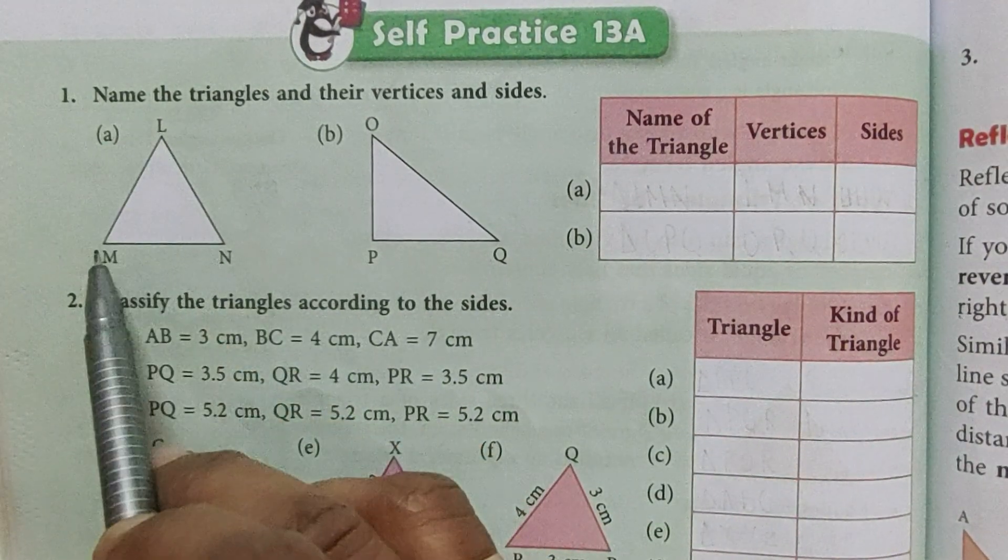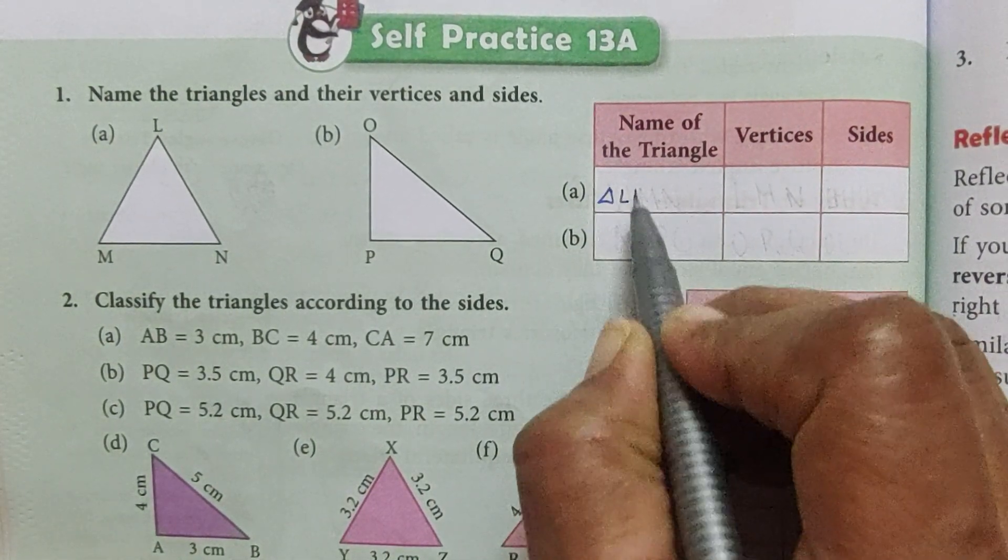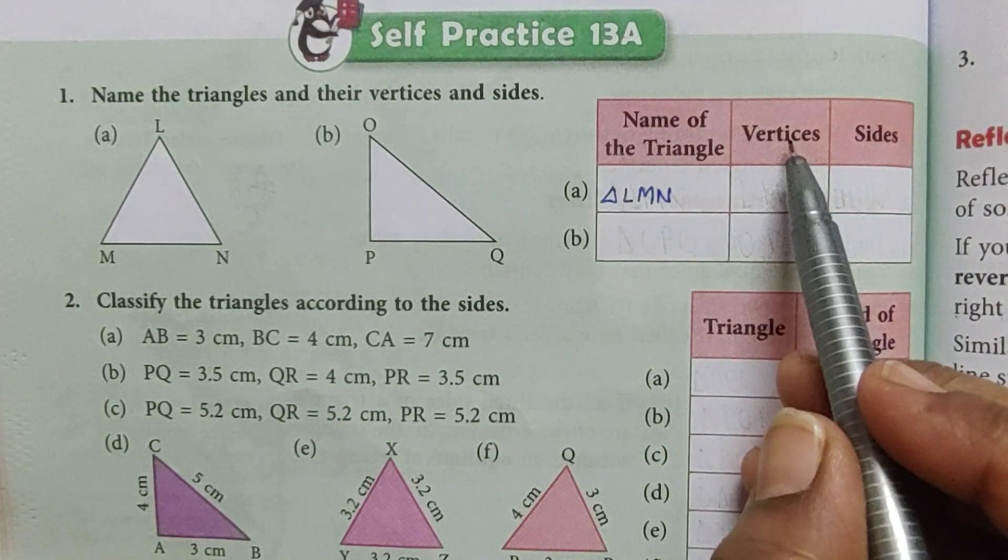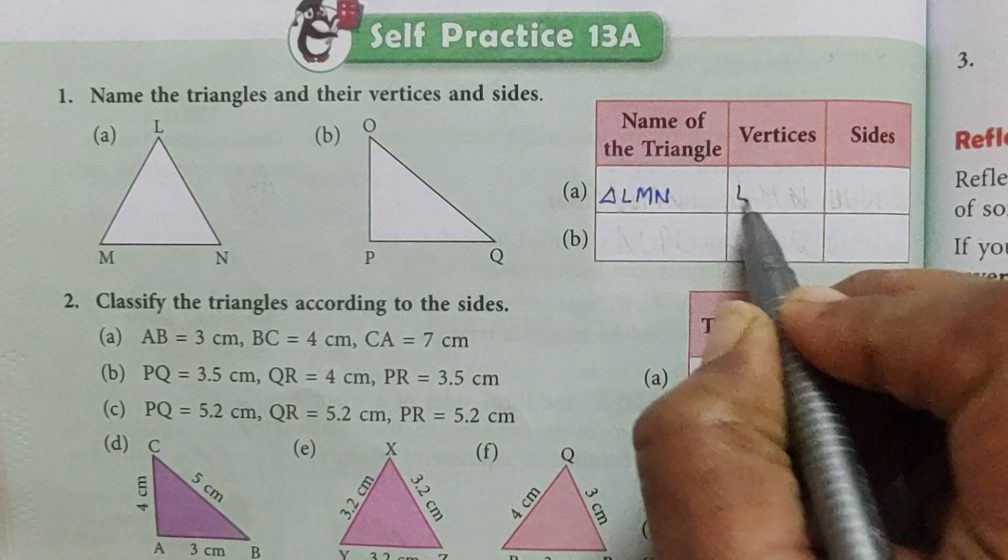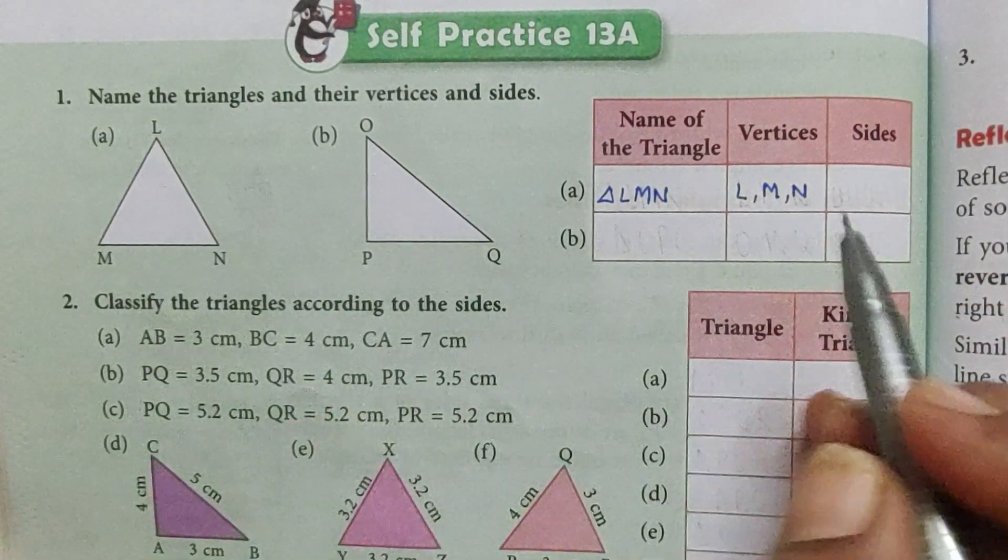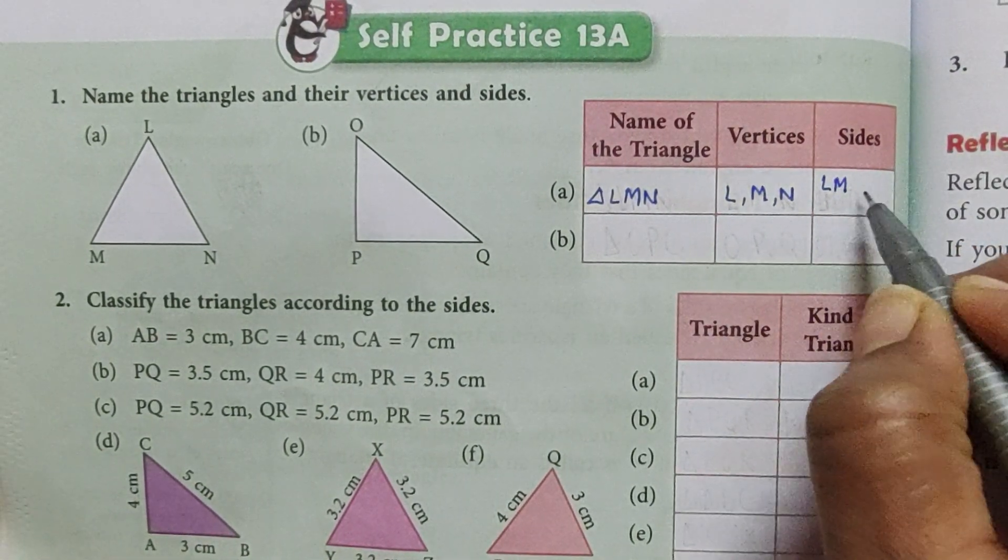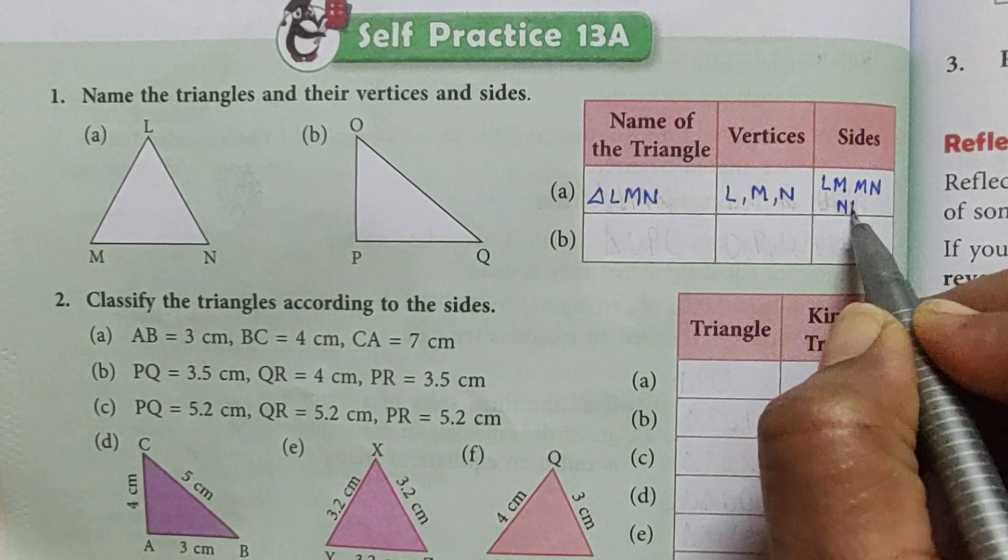So part A, the name of triangle is triangle LMN. Now vertices are L, M, and N. Now sides are LM, MN, and NL.